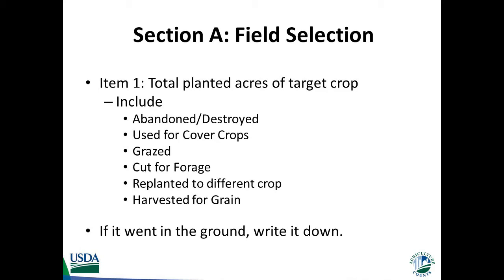Be sure to record all acres to the nearest tenth. There is no need to distinguish between organic and conventional crops. If no acres were planted, you want to review the screening survey information form, make good notes, and then go to the conclusion on the back page.